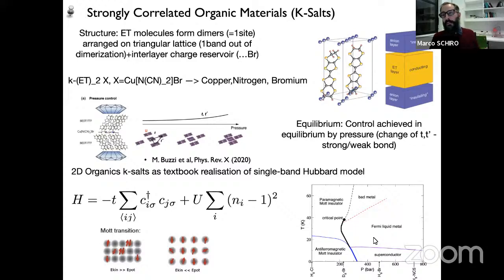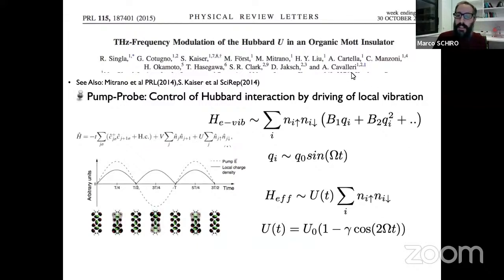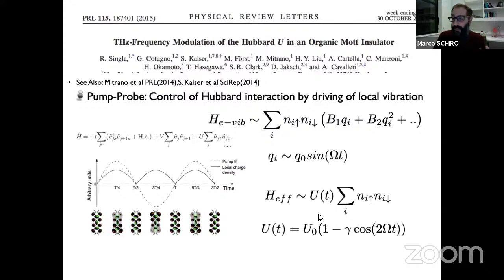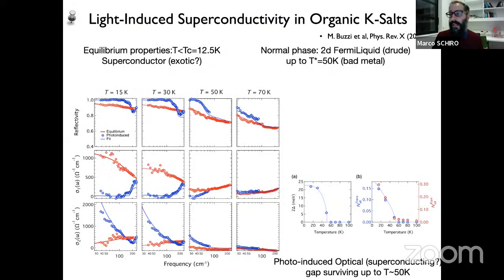As a function of the ratio between hopping and Coulomb repulsion you typically have a Mott transition between a metal and an insulator. Our interest is in light control and non-equilibrium control of these materials. This is motivated by experiments done mostly in the group of Andrea Cavalleri, showing that by shining light in the frequency range where local vibrations live, one can effectively modulate in time the Hubbard repulsion U. You pump these phonons — harmonic or weakly anharmonic oscillators — and make them oscillate with frequency omega, and these vibrations couple to the electronic structure, resulting in a Coulomb interaction modulated in time.